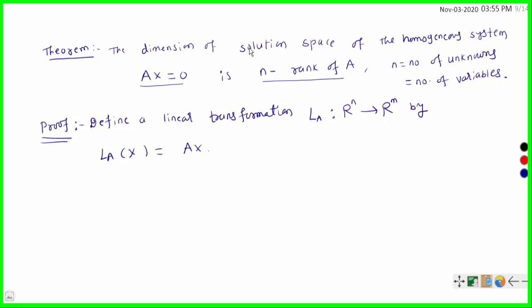So dimension of the solution space of this homogeneous system is n minus rank of A. To prove this theorem, we consider a linear transformation La from Rn to Rm — we already know this linear transformation — defined by La of x is equal to Ax.